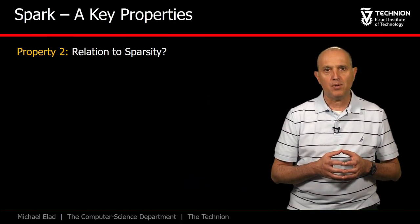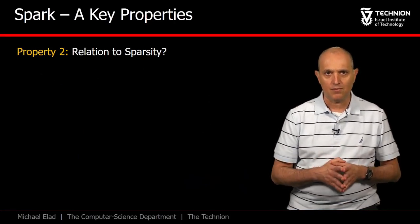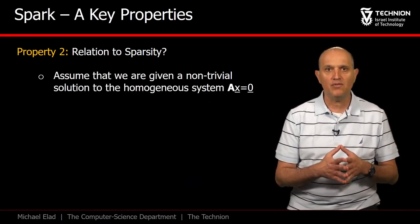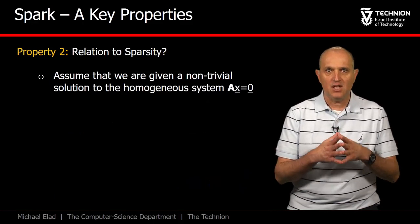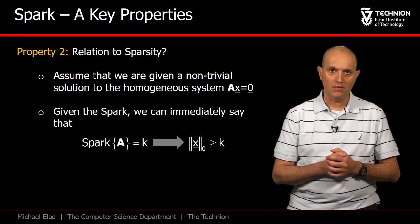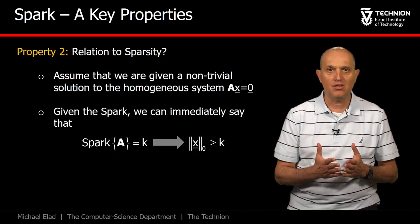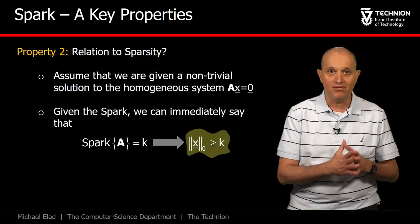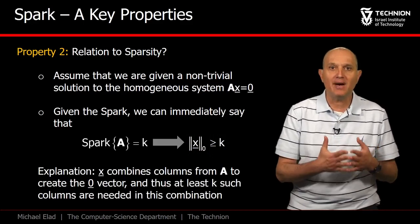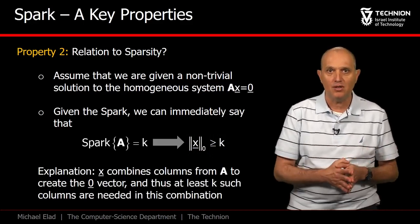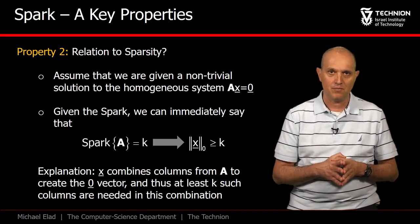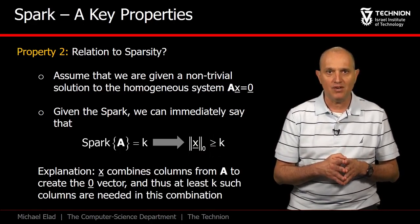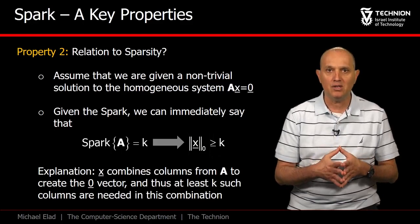The following property of the spark will tie it to our sparsity story. Assume that we are given a non-trivial vector x, known to be in the null space of A. That is, it satisfies the equation A x equals 0. Well, the immediate implication is that the number of non-zeros in x must be spark and above. Why? Because the term A x combines columns from A to create the zero vector, implying that these columns are linearly dependent. And such a set of columns from A must have at least spark elements. So a vector in the null space of A must have an L0 norm lower bounded by the spark.